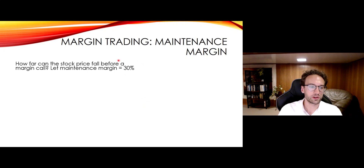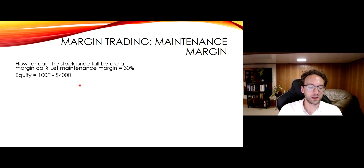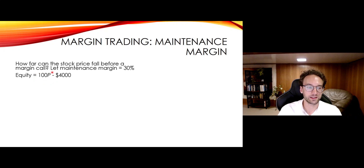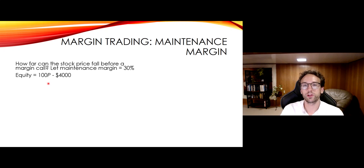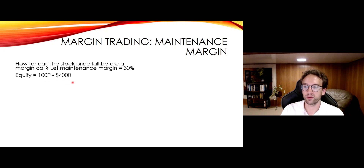I will probably ask you this type of question on an exam sometime: how far can the stock price fall before there is a margin call? Let's assume the maintenance margin is 30%. First, get an equation for what your equity is at any time. What assets do you have? It's 100 times the price of the stock — here I use P to denote price of the stock. That's your assets. What are your liabilities? Well, you borrowed $4,000, so that never changes. So your equity is 100 times the share price of the stock minus $4,000.